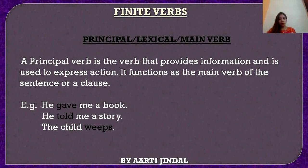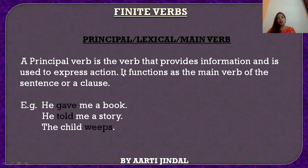Finite verbs ki total 3 main sub-parts hoti hain. First part is principal verb — it is also known as lexical or main verb. A principal verb is the verb that provides information and is used to express action. It functions as the main verb of the sentence or a clause. Principal verb wo verb hoti hain jo kuch information deti hain aur action ko represent karti hain — means batati hain ki kuch kaarya ho raha hai. Aur yeh sentence ki main verb hoti hain. Example se samajhte hain.